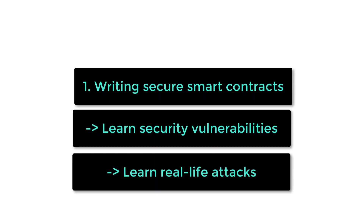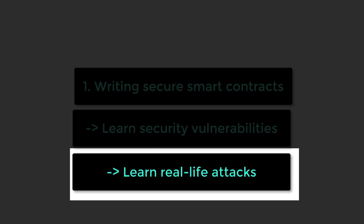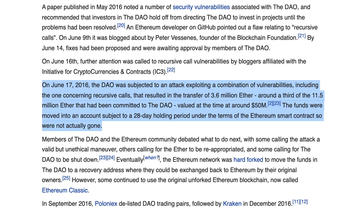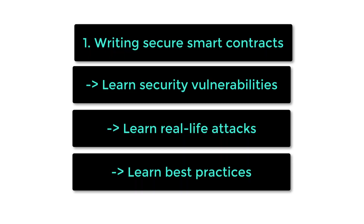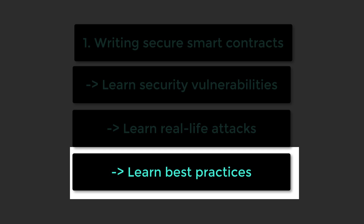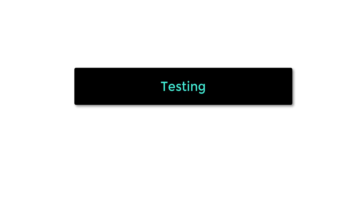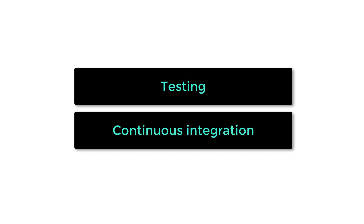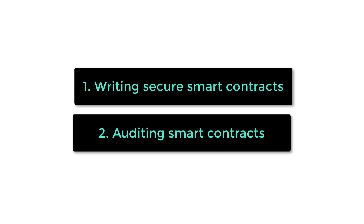For each of these security vulnerabilities, you need to know a corresponding real-life attack that used the vulnerability. This is important because employers will ask you to explain a couple of real-life attacks. Once you know this, the next step is to know all the best practices for your development workflow — for example, you need to test each smart contract thoroughly and set up continuous integration to run tests automatically after each commit.